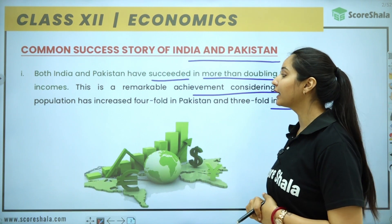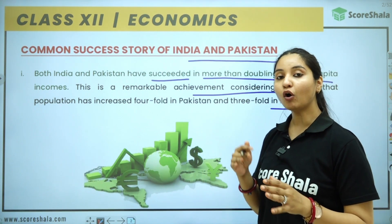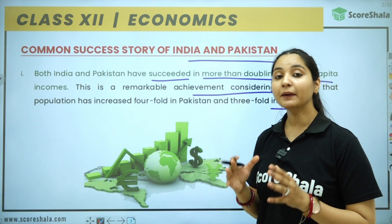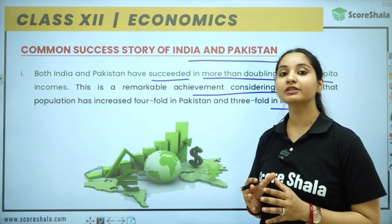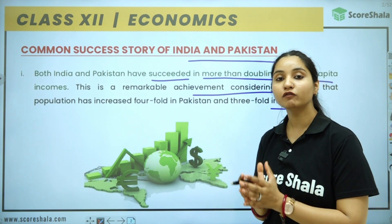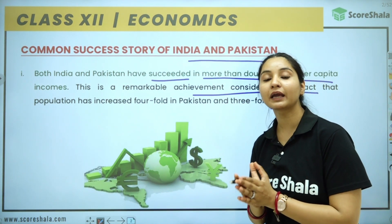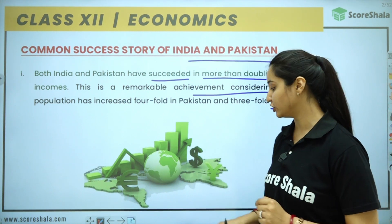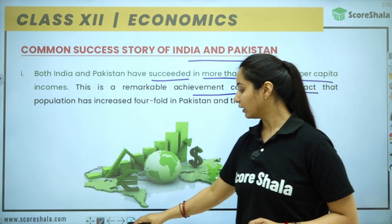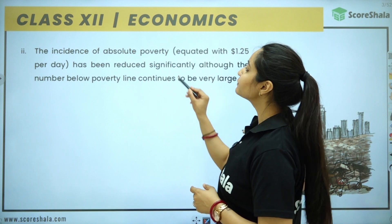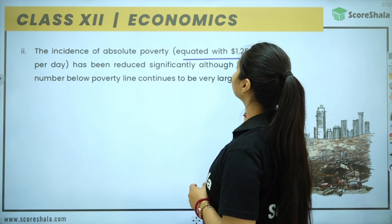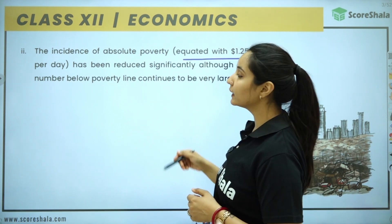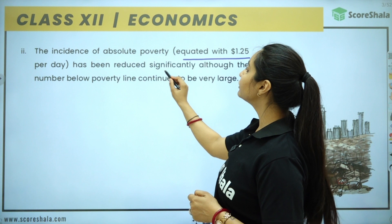We know that Pakistan and India's population is very large. In both countries, if the population has grown so much yet per capita income has doubled, it is a very big achievement. The incidence of absolute poverty, equated with $1.25 per day, has been reduced.